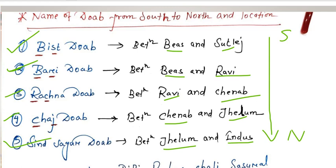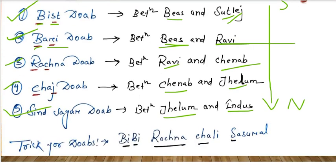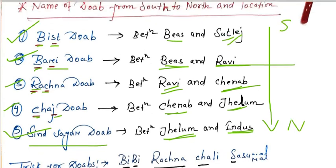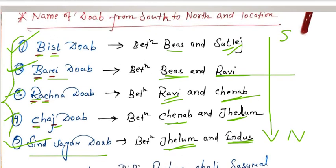For convenience, here are some tricks to remember these doabs. In 'Bist' doab, from B you can remember Beas and from S you can remember Sutlej. For Bari doab, B gives Beas and R gives Ravi. For Rachna doab, R gives Ravi and C gives Chenab. For Chaj doab, C gives Chenab and J gives Jhelum. For Sindh Sagar doab — Jhelum and Indus — you have to remember it directly.